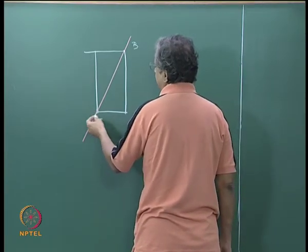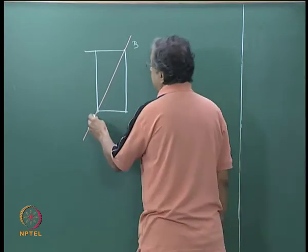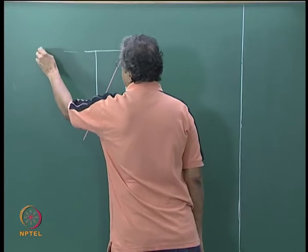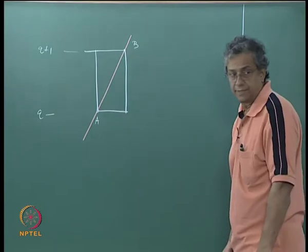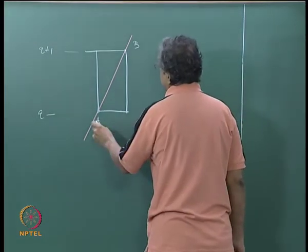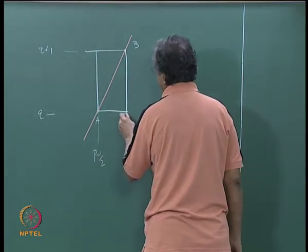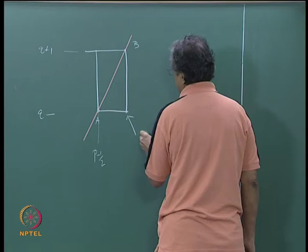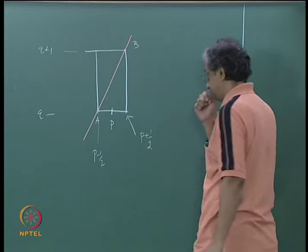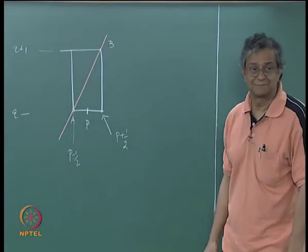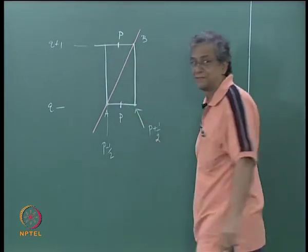This point is not only identified as A but in our finite difference scheme, this is at time level q plus 1, this is at time level q, and in our finite difference scheme, this point is p minus half, that point is p plus half, and this midpoint is p. So it turns out that that midpoint is p, which is the critical thing that I need.